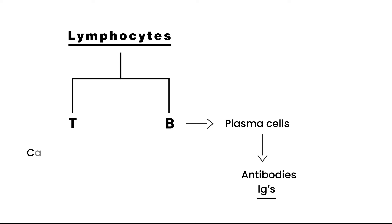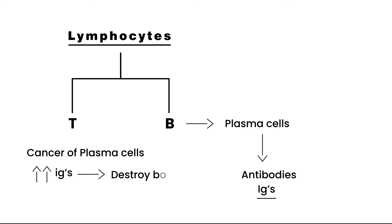Multiple myeloma is a cancer of these plasma cells. When that happens, you get the production of large quantities of immunoglobulins, and those immunoglobulins go on to destroy bone tissue — that's the main problem. The average age of someone with multiple myeloma is about 65, so we're talking about the senior population.